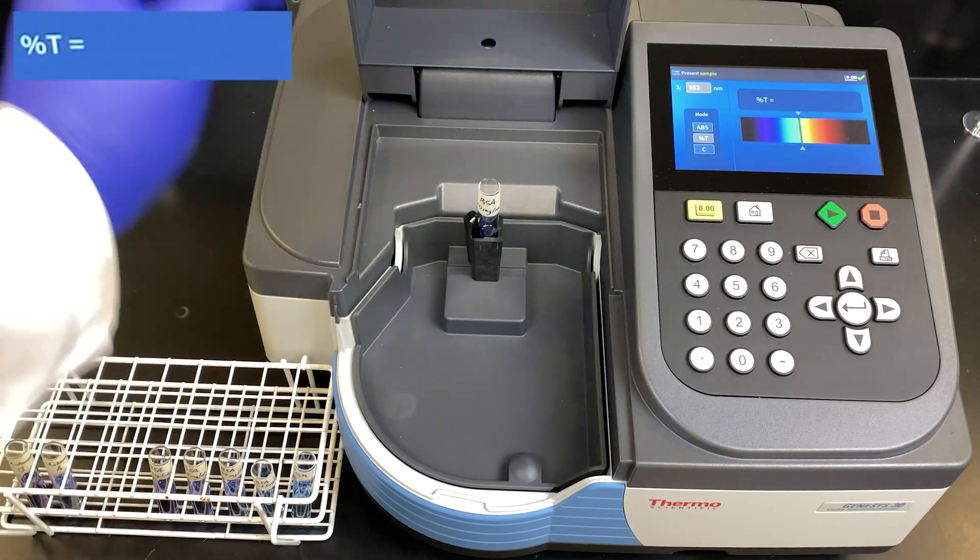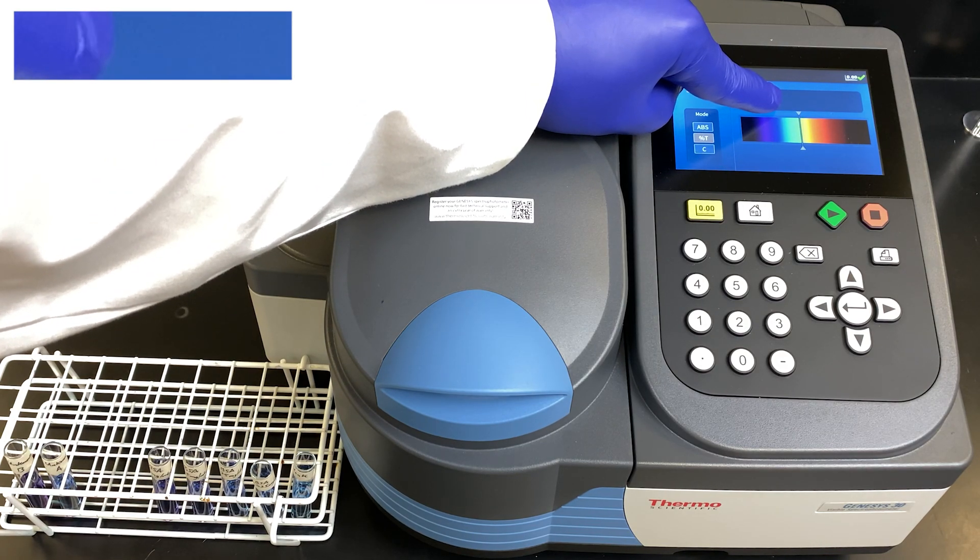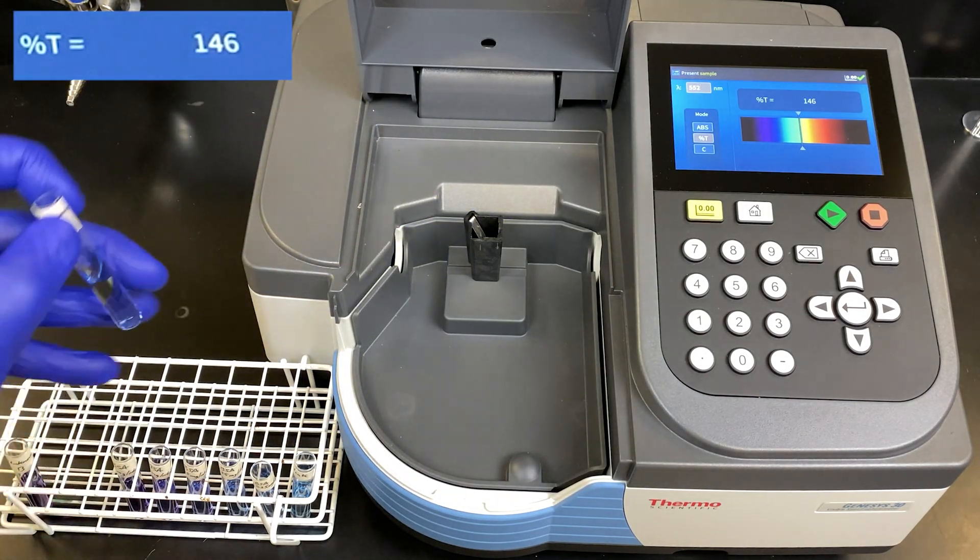Our last standard now goes in, 10 mg per mL BSA. Read off that last value and now we have all the data to make our standard curve. We will plot concentration on the horizontal axis and absorbance on the vertical axis.